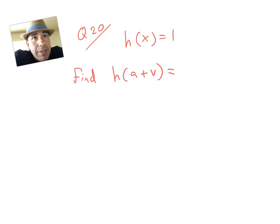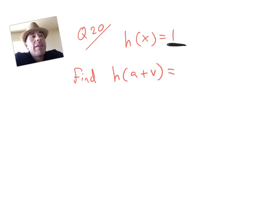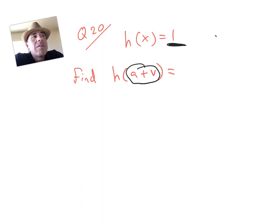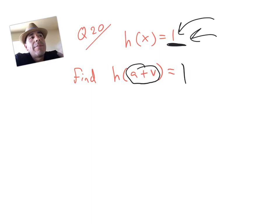This is another one of these functions that's really easy but a little bit tricky. Notice over here in my function, it's always 1 — there's no x value, so there's nowhere to plug anything in. It's telling us to plug in a plus v everywhere you see an x, but we don't see an x. So for these problems, when there's no x value in the function, your answer is always whatever you see right there. Your answer is always going to be 1 — I don't care if you had h of happy face, your answer would still be 1 for this function.